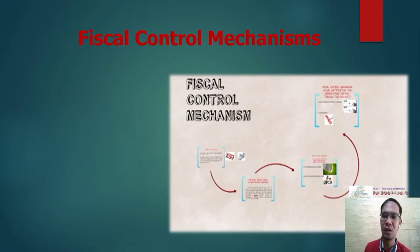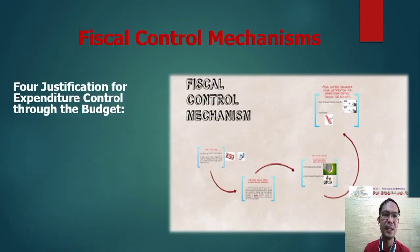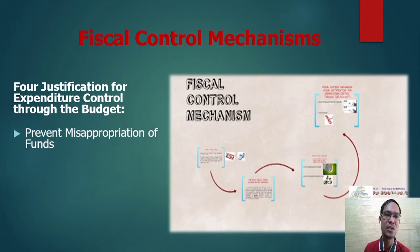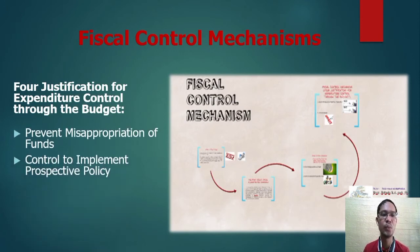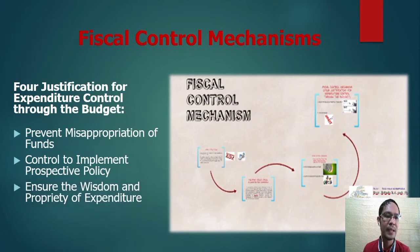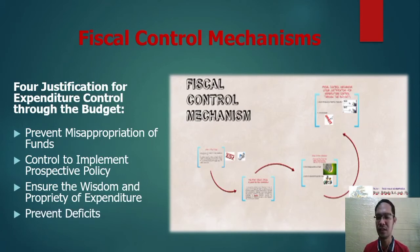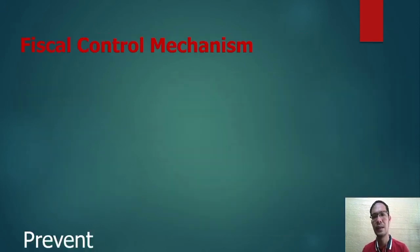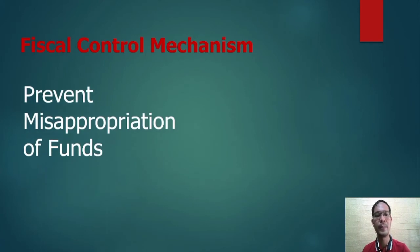There are fiscal control mechanisms, and there are four justifications for expenditure control through budget. First, to prevent misappropriation of funds; second, control to implement prospective policy; third, to ensure the wisdom and propriety of expenditure; and fourth, to prevent deficits. What do you understand about preventing misappropriation of funds?